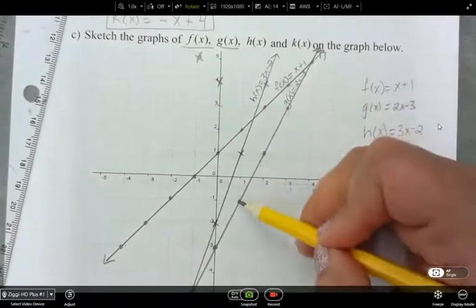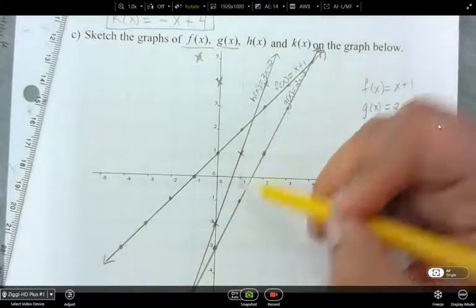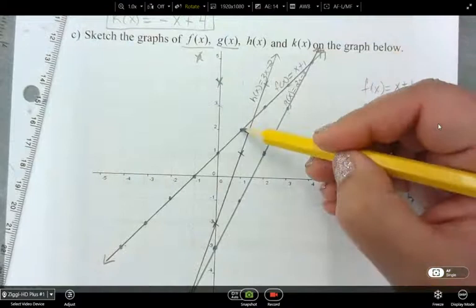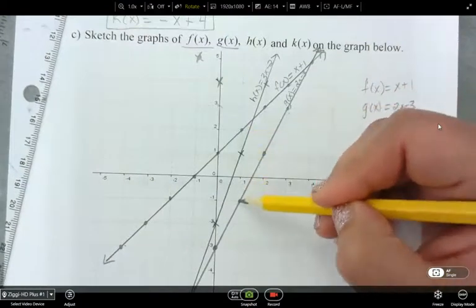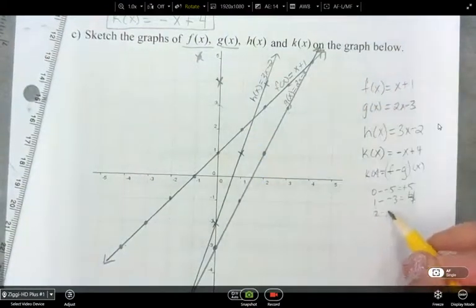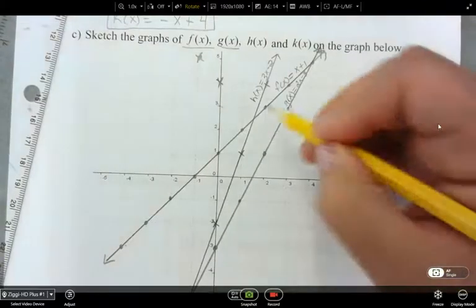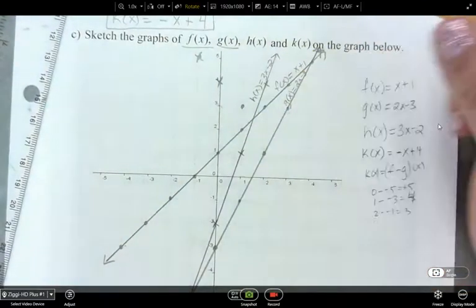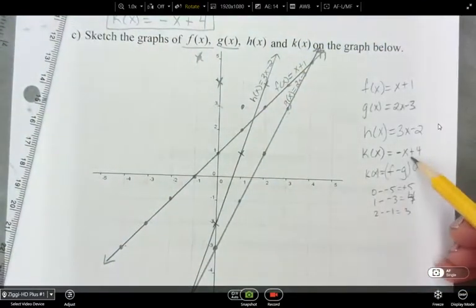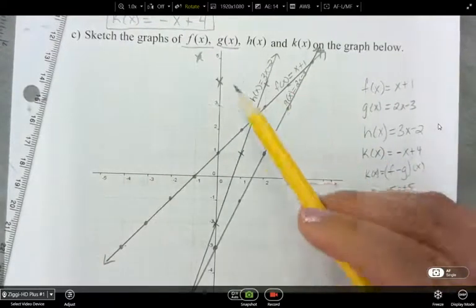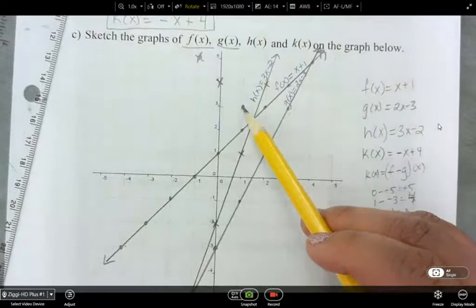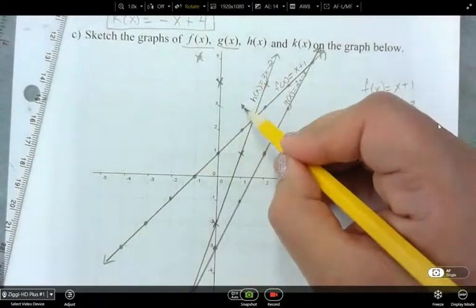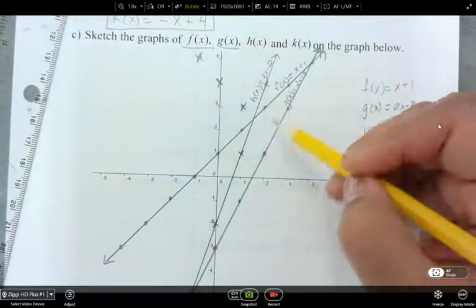1 minus negative 3, that's 4. And then over here for x equals 1, what is 2 minus negative 1? So that's going to be right here. Now, is this so far following the equation that I have? Yeah. So where's my y-intercept? It's at 4. And what's my slope? It is negative 1 over 1.